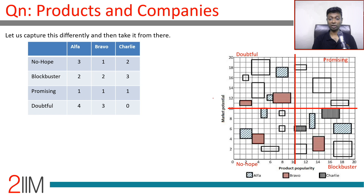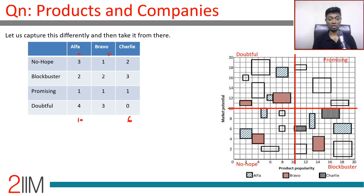To summarize the product counts: Alpha has 3 Blockbuster, 3 No Hope, 1 Promising, 4 Doubtful — totaling 10 products. Bravo has 2 Blockbuster, 1 No Hope, 1 Promising, 3 Doubtful — totaling 7. Charlie has 2 Blockbuster, 2 No Hope, 1 Promising, 0 Doubtful — totaling 6 products.